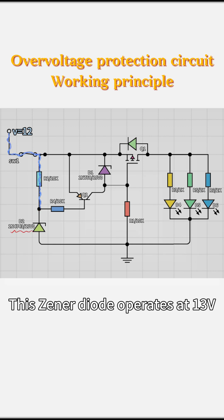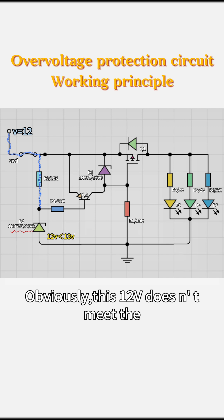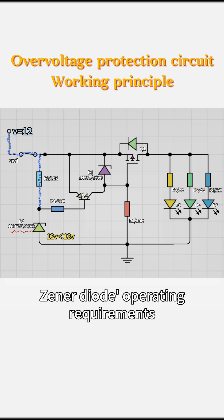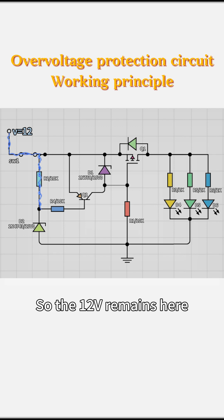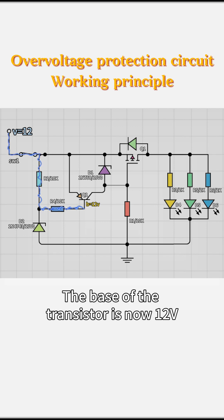This Zener diode operates at 13V. Obviously, this 12V doesn't meet the Zener diode's operating requirements, so it won't function or break down. So the 12V remains there at this point. The base of the transistor is now 12V.